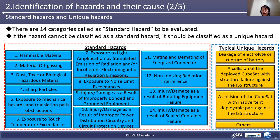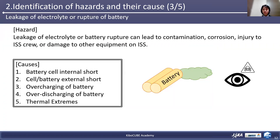Also, there is a hazard that the satellite may collide with the ISS structure when it is deployed. The unique hazard varies depending on the specification and condition of the satellite. Once the hazards are identified, it is time to consider their causes. As one unique hazard — leaking electrolyte and battery rupture — it can lead to contamination, corrosion, injury to the ISS crew, or damage to other equipment. For this hazard, there are five causes: occurrence of an internal short in the battery, an external short, overcharging or over-discharging the battery, and thermal extremes.